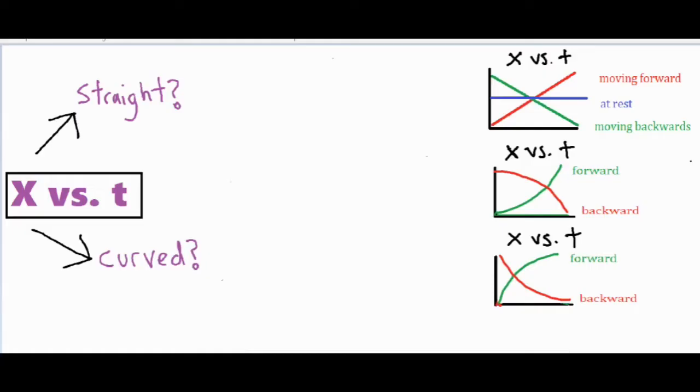The position is the exact location of an object at a certain time and we normally have the position on the y-axis and then we have the time on the x-axis.